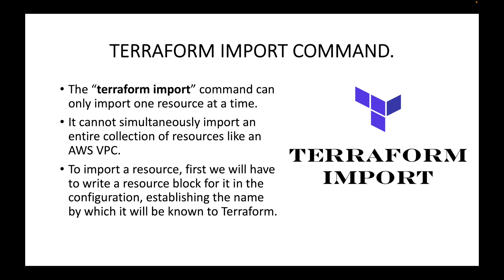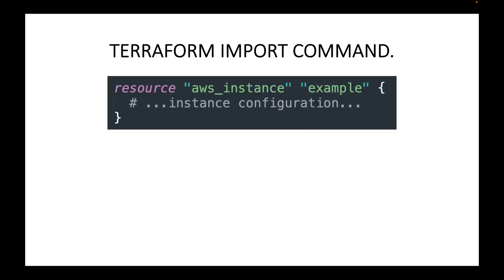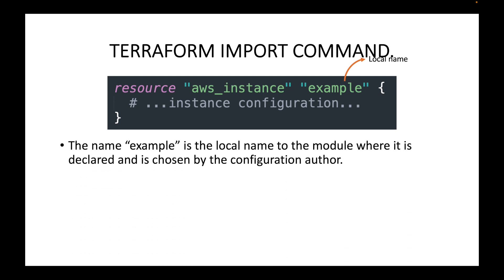To import a resource, we will first have to write a resource block for it in the configuration, establishing the name by which it will be known to Terraform. So before we run the Terraform import command, we must write the respective resource block for the resource we want to import. Here is an example resource block — you define the resource type and give a local name to that resource.